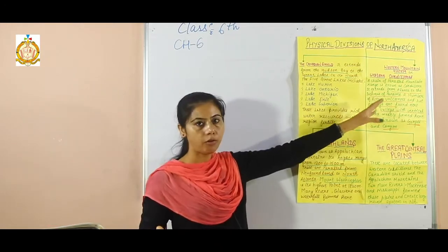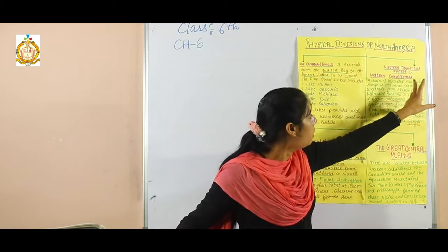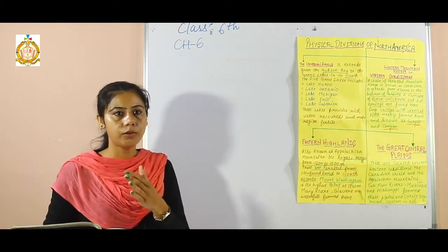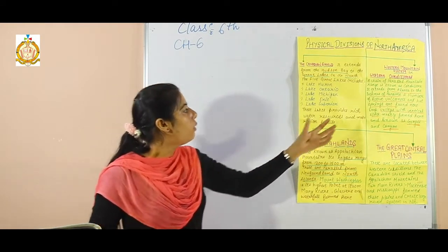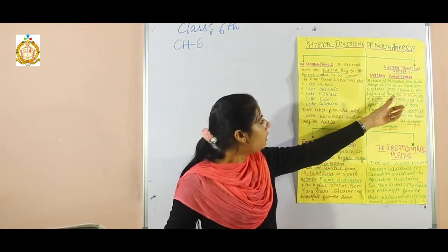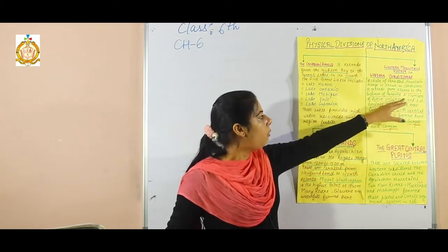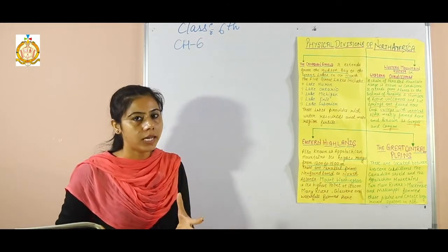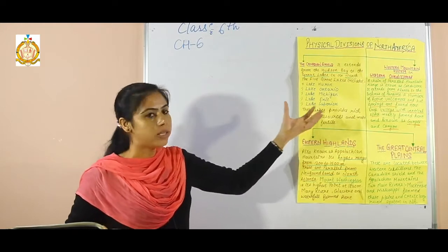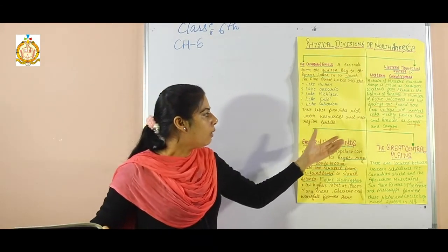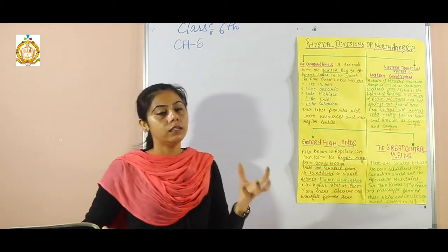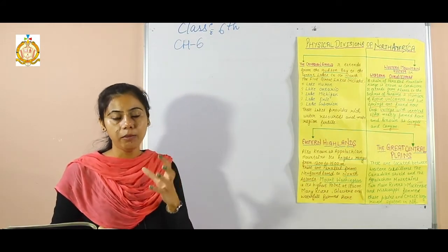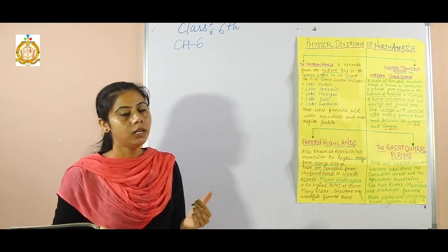The second physical division of North America is the Western Mountain System or Western Cordillera. A Cordillera is a parallel range of mountain systems. The Western Cordillera, a chain of parallel mountains, extends from Alaska to the Isthmus of Panama. A number of active and extinct volcanoes and earthquakes are also found in the Western Mountain System. Deep narrow valleys with vertical sides, known as canyons and gorges, are also located here.